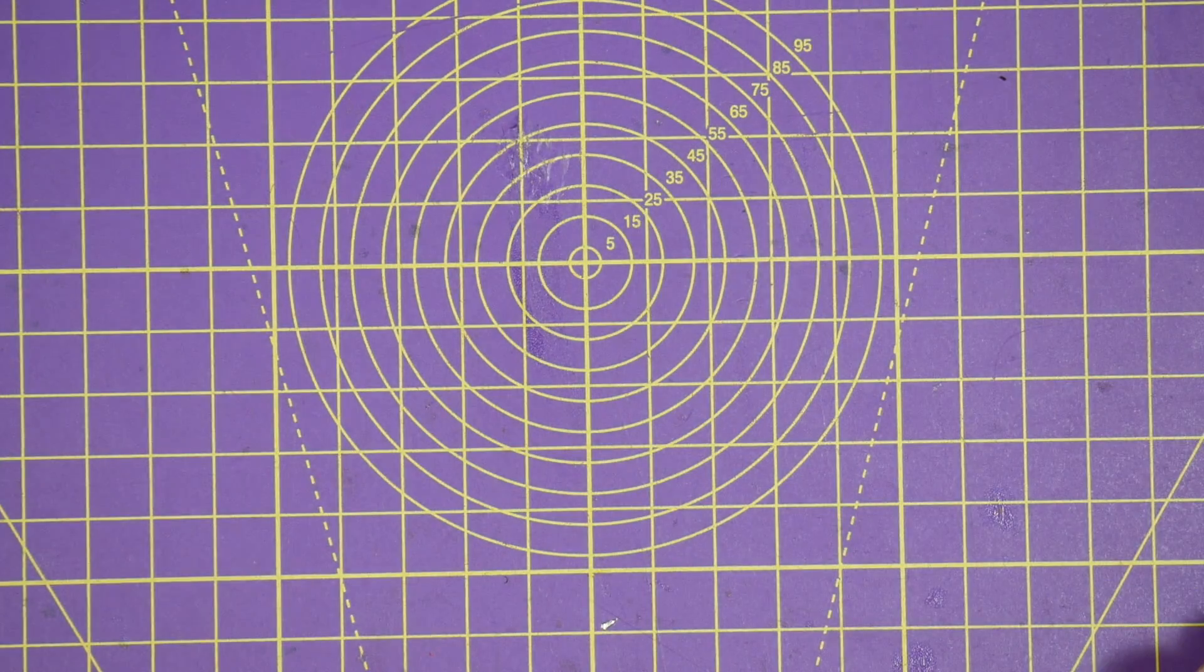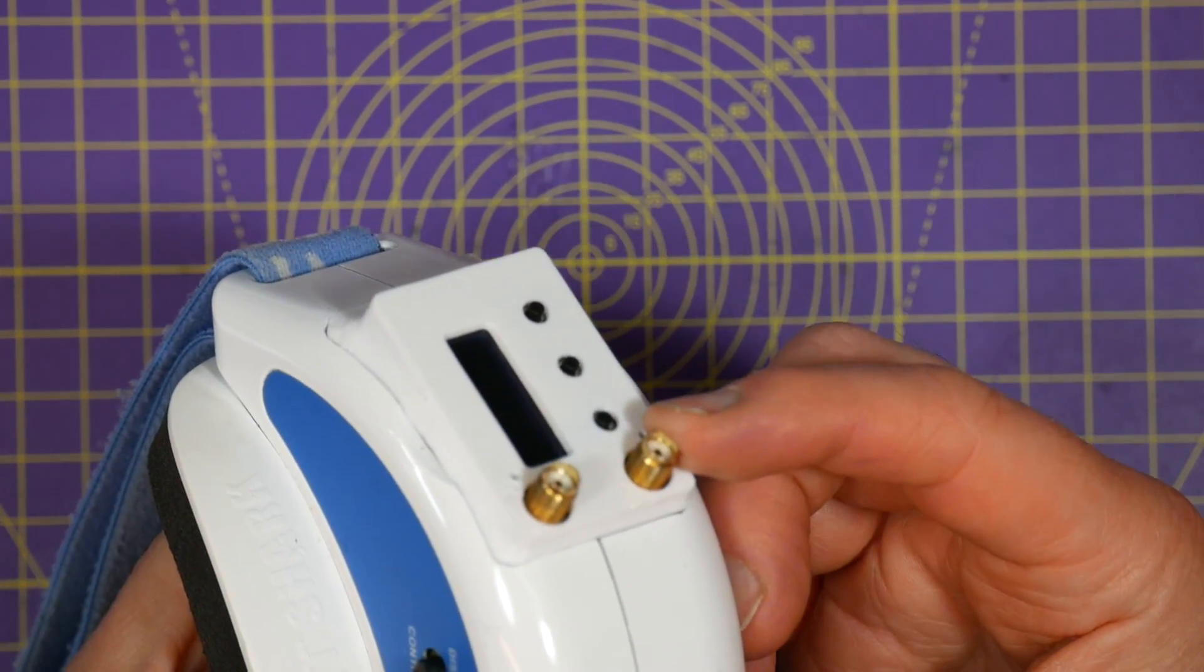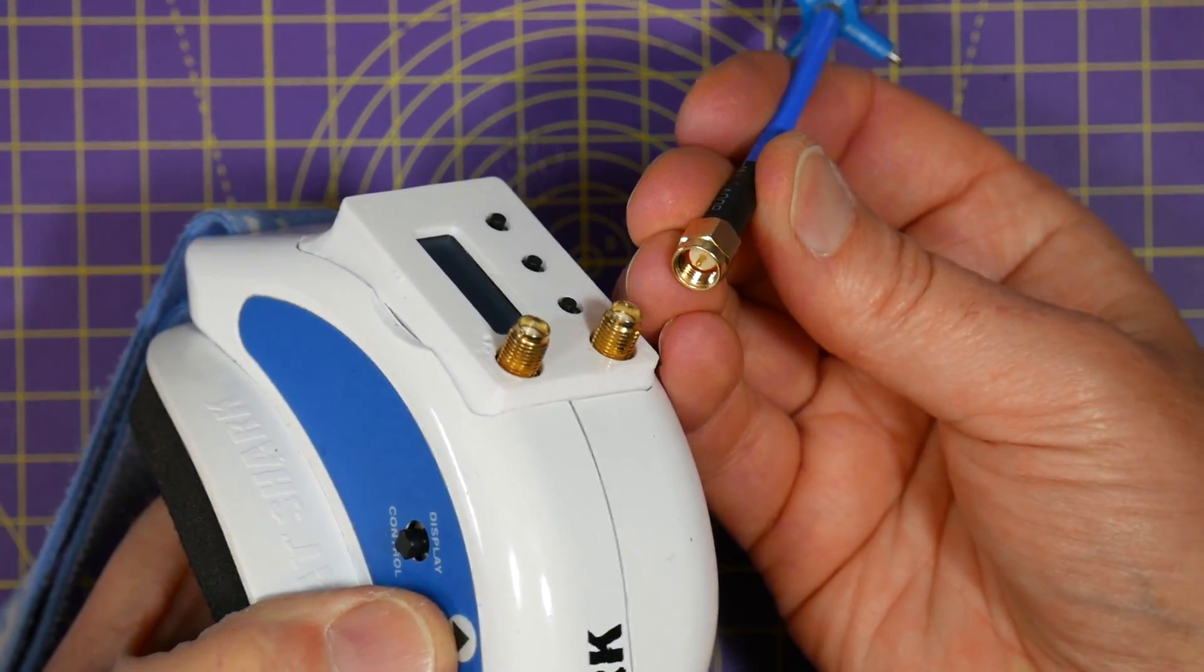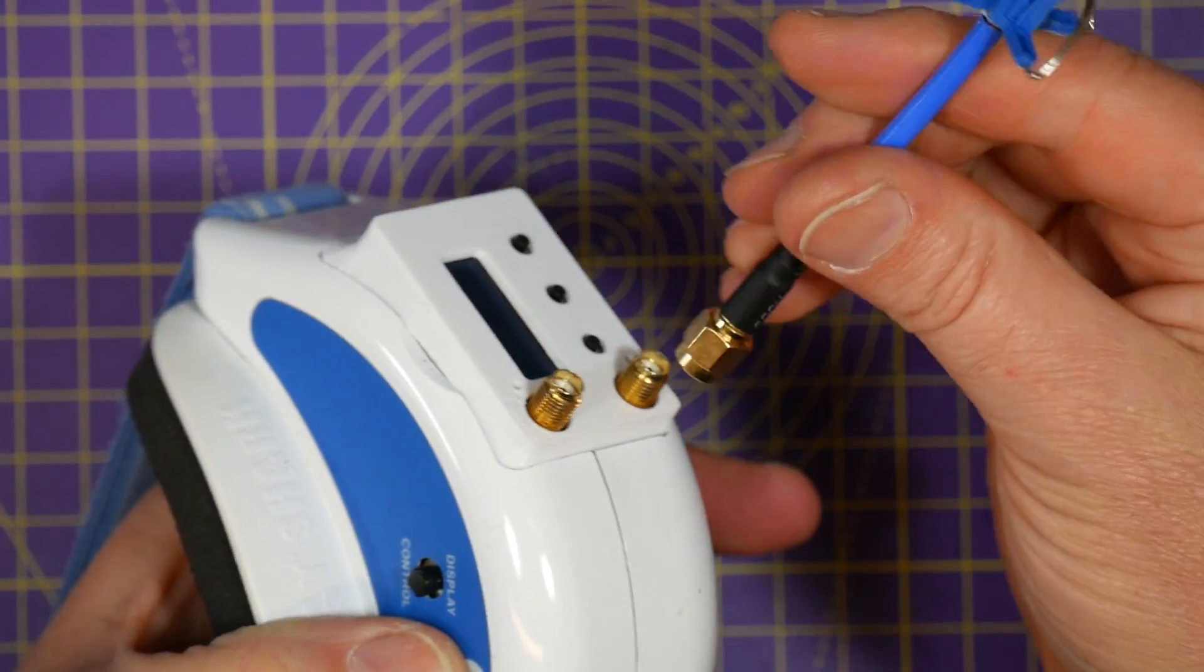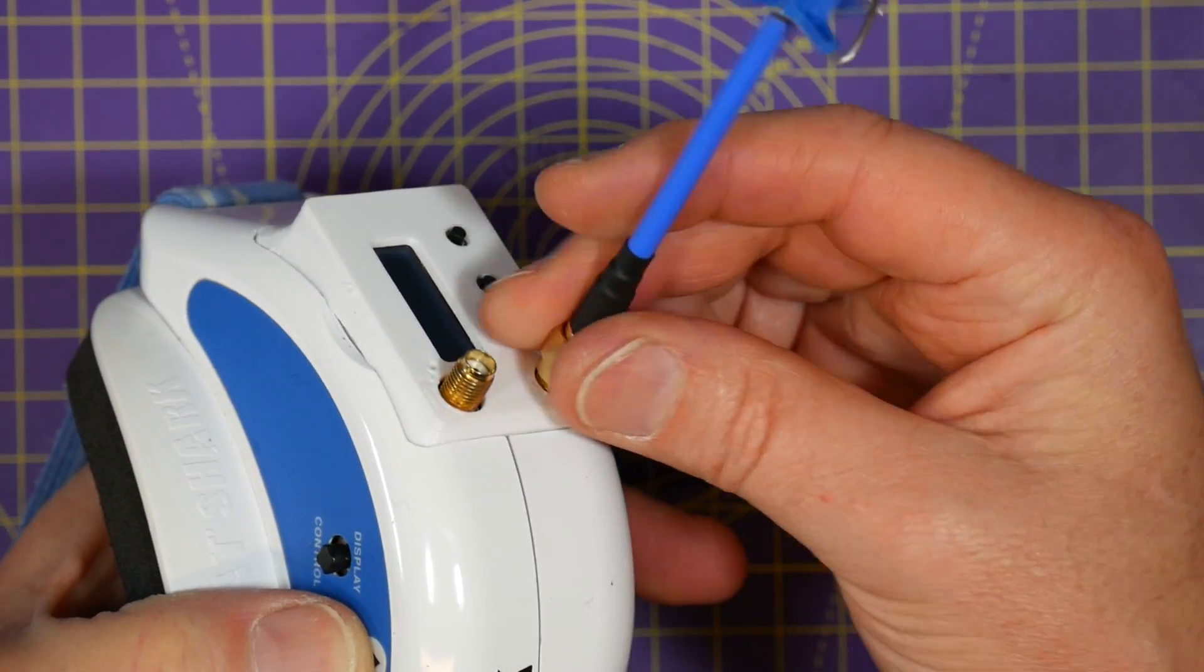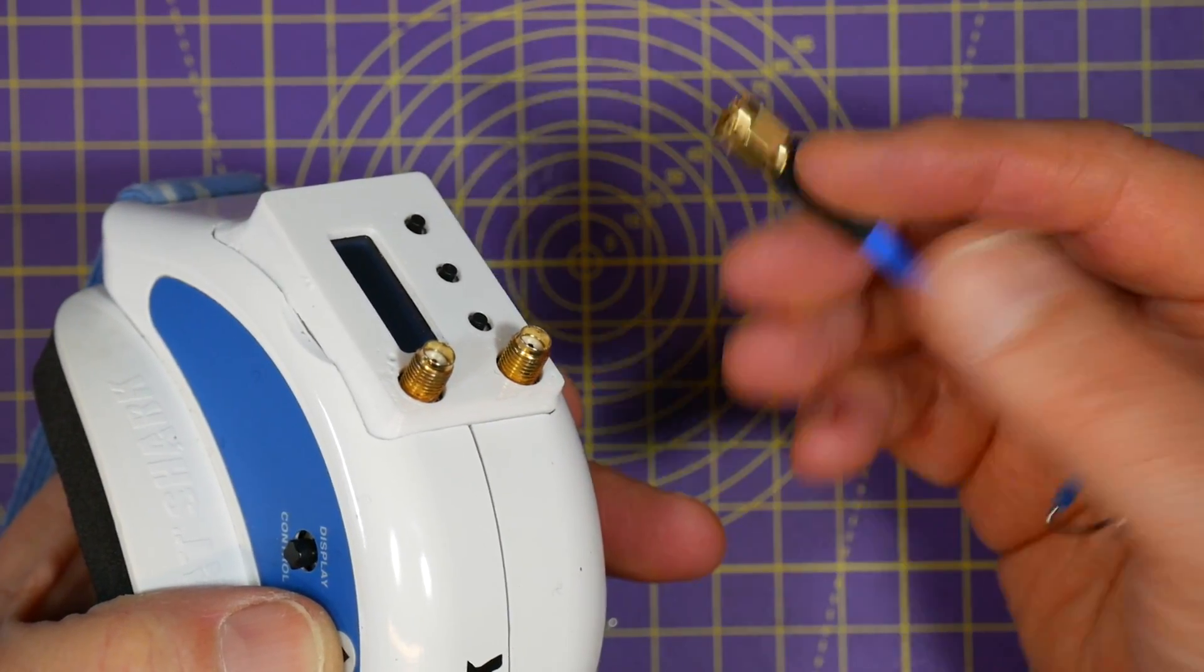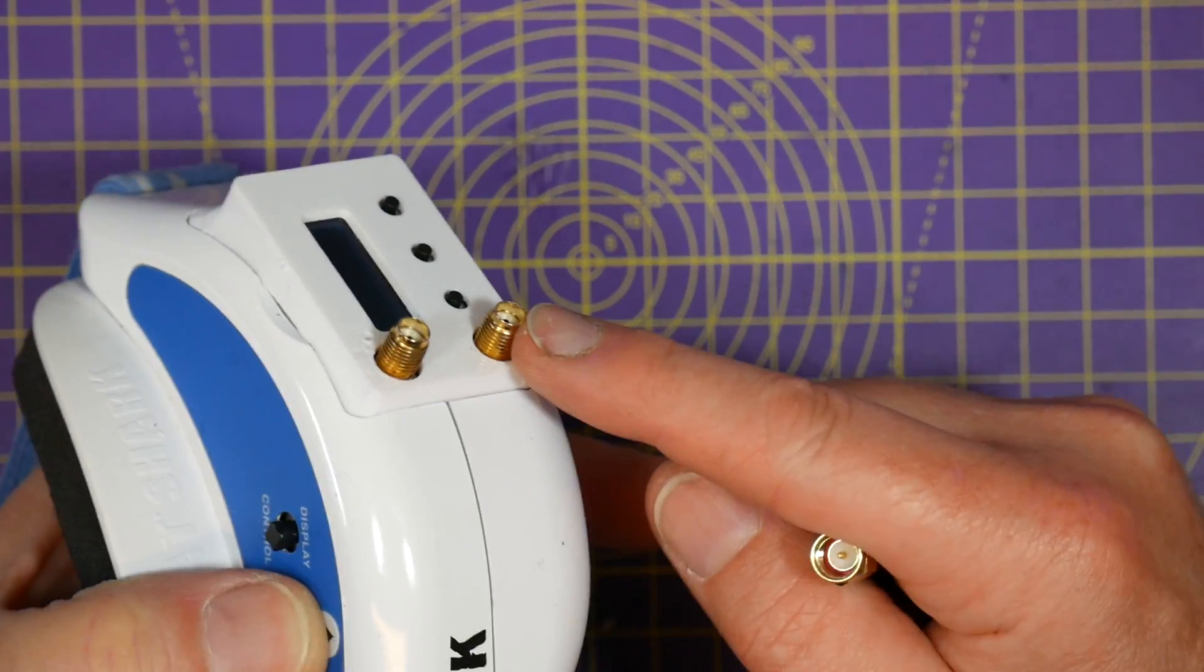So take a look at these Fat Sharks. This is an SMA connector. So if we take an SMA, we've got a pin in the middle and we've got a hole there. And this just screws in and it connects. And this is great because it means that you can actually use the SMA connector on your video transmitters and your receivers.